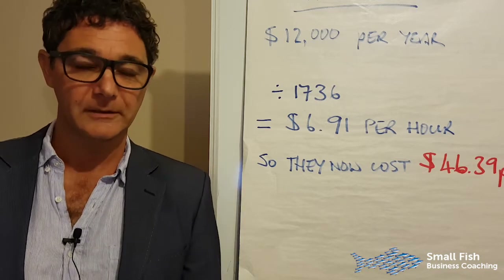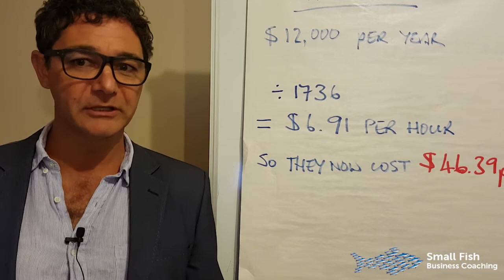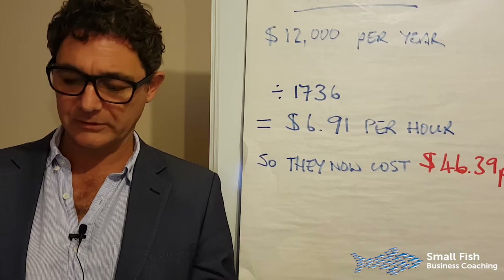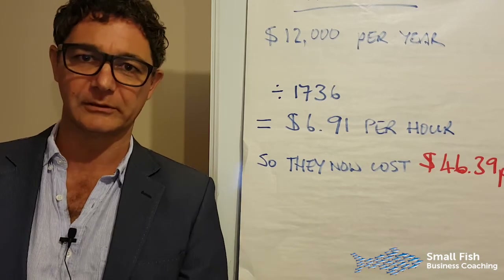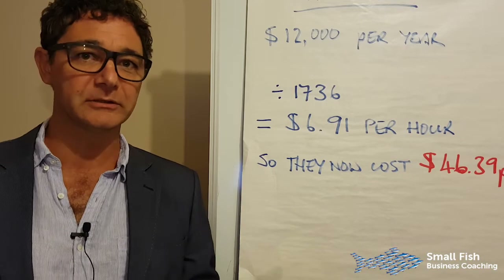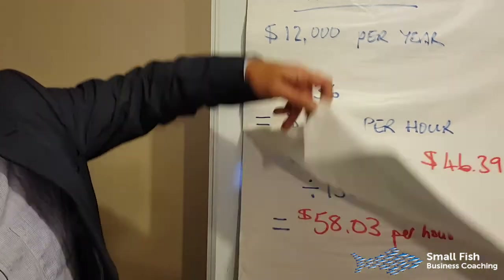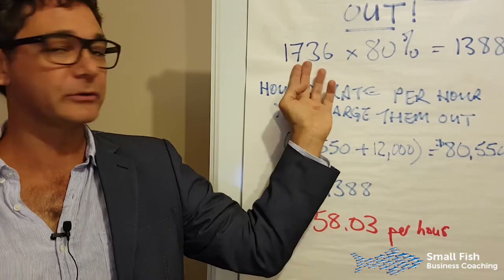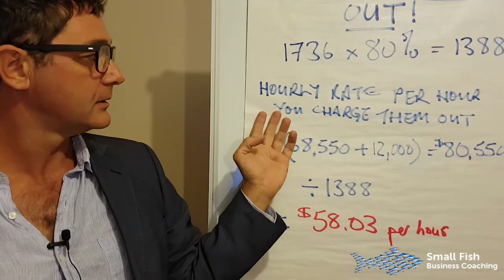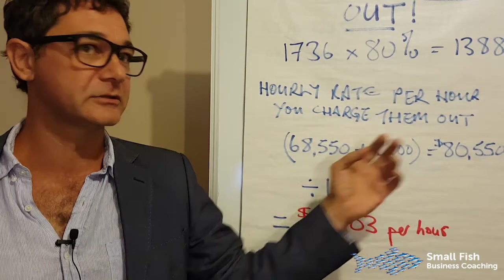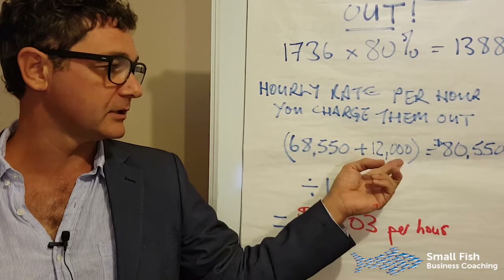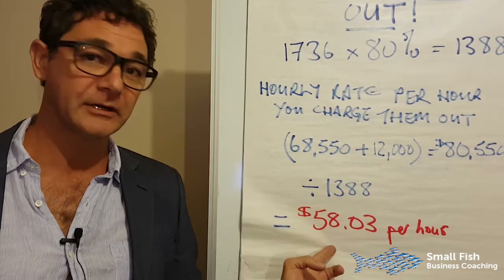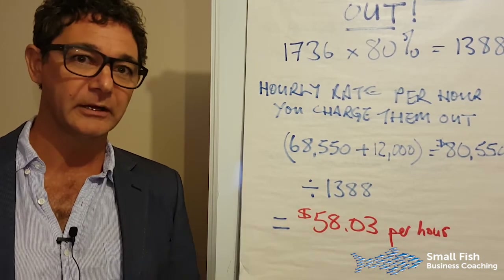I worked with an accountant who had three accountants working for her — her target was 80% utilization and they achieved it, sitting at their desks all day with work fed to them. Let's be generous and say your guys do 80% on average. So 80% of 1,736 is 1,388 chargeable hours. That means your $68,550 plus $12,000 car — $80,550 total — divided by 1,388 gives you $58.03 per hour as your true cost.